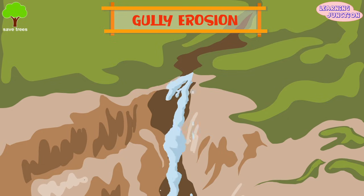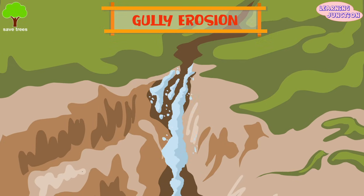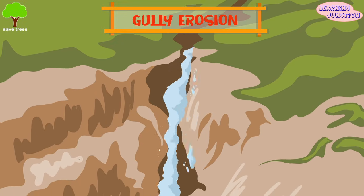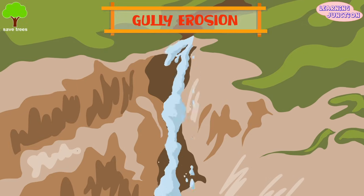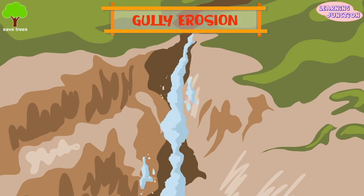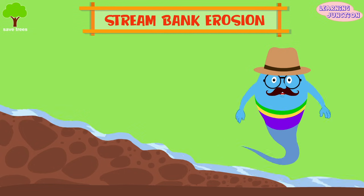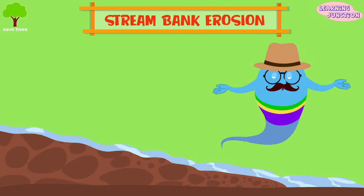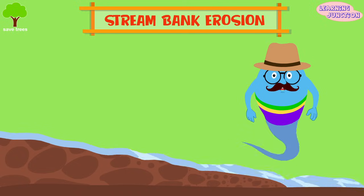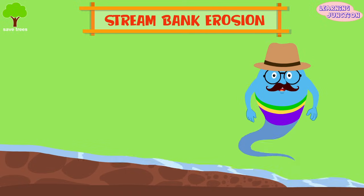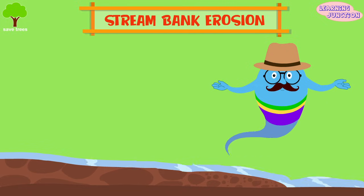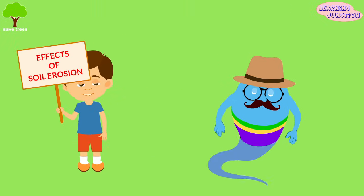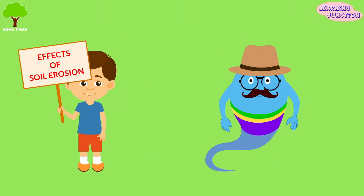Gully erosion: the headward, destabilized erosion which occurs due to the runoff of surface water along drainage lines. Stream bank erosion: the washing away of soil from banks of a stream or a river is called stream bank erosion.